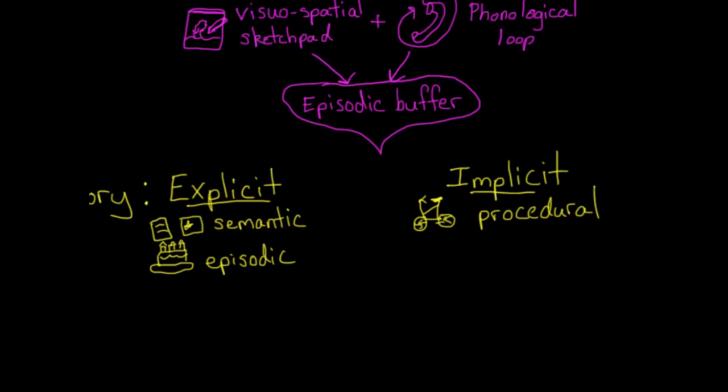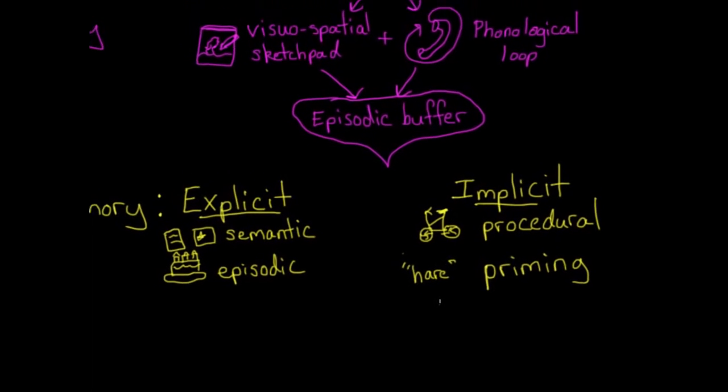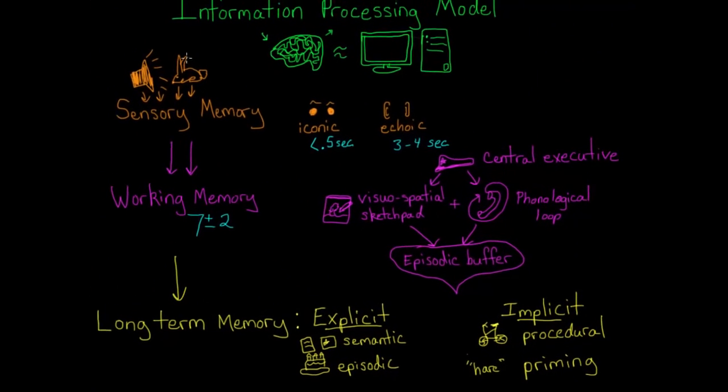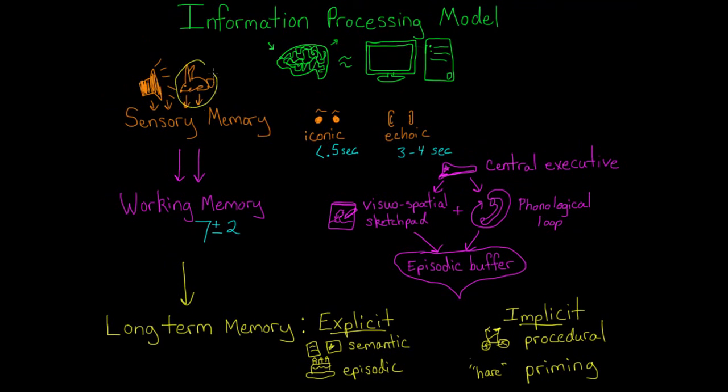The last type of implicit memory is called priming, which means that previous experience influences your current interpretation of an event. For example, if I say the word hair, what do you think of? If you paid attention at the beginning of this video, then you might have thought of hair as H-A-R-E, meaning rabbit, because you were primed with the bunny picture at the beginning. Your recent experience of seeing a bunny stayed in your memory and influenced your interpretation of the word that I said.